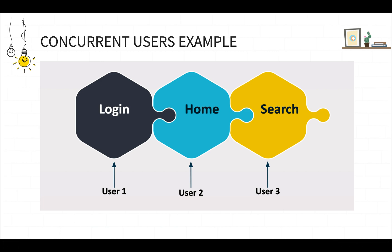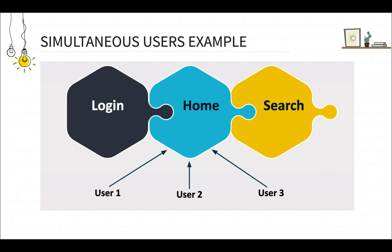Although these users are active on the system, they are not carrying out the same operation — they are on different operations, so these are the concurrent users. Whereas simultaneous users are carrying out the same operation at the same time: user 1, user 2, and user 3 are all accessing the home page at the same time. So these are the simultaneous users. I hope this difference is clear to you.